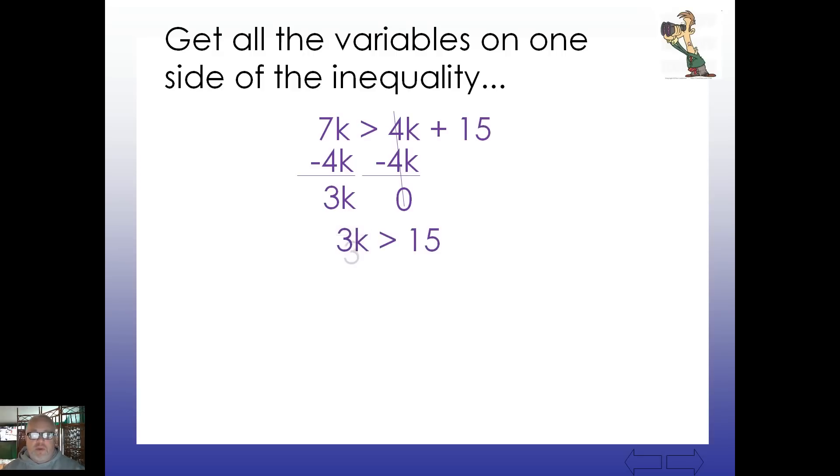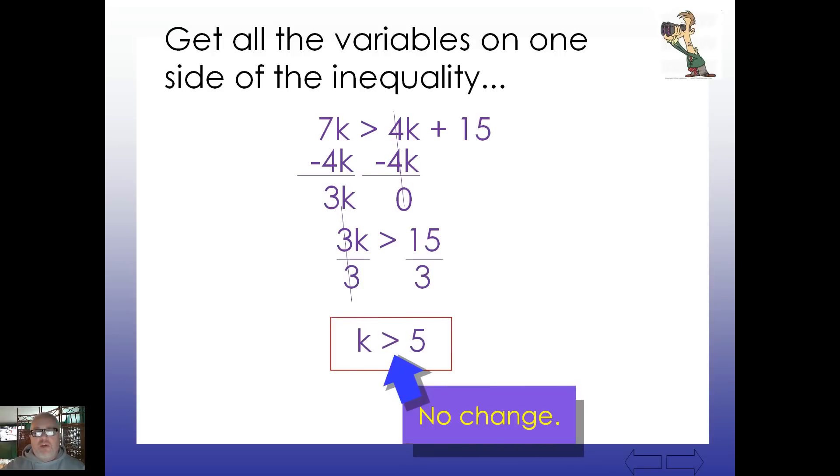And we end up with 3k is greater than 15. You know what to do next. Divide both sides by 3. And our final result is k is greater than 5. So any value for k that you choose, as long as it's larger than 5, 5.0001 all the way up to 500 trillion or positive infinity is going to work here. And of course, there's no change in our flipping the sign.